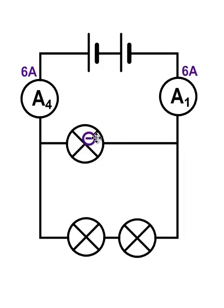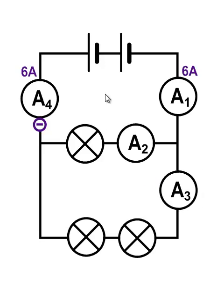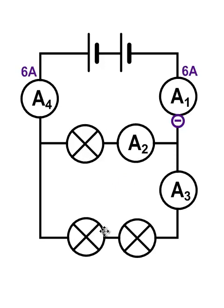However, the current isn't necessarily going to be the same through the branches, because the electrons don't all have to go through one branch — they can go through both. If we put an ammeter in the middle branch and one in the lower branch, we're not going to get six amps each. Electrons are slightly lazy, so they prefer the branch with lower resistance. This branch has one bulb, while the lower branch has two bulbs and twice the resistance, so electrons are more likely to go through the middle branch.